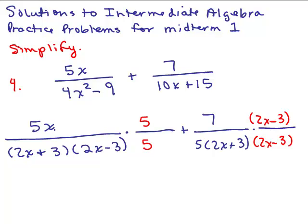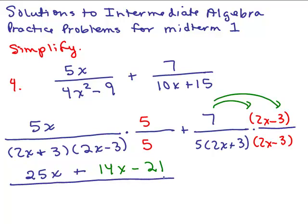Now we need to multiply 5x times 5 for the first numerator and that'll give you 25x. Since it's all going to be over the common denominator, I'm just going to put plus and I'm going to do the same thing for the second fraction. I have 7 times 2x minus 3, so let's do the distributive property here. We'll end up having to multiply 7 times 2x, which gives you 14x minus 21, all over the denominator.